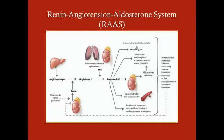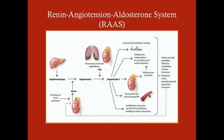Regarding the renin-angiotensin-aldosterone system: renin increases because of decreased renal perfusion. The JGA senses that as decreased blood pressure — and in most cases when you're dehydrated, that's what it is. The kidney secretes renin so you retain sodium and therefore water. But with RAS, the kidney senses low blood pressure when you really don't have it, and it continues to do so even as blood pressure rises — so that increase in renin is what's driving the elevated blood pressure.